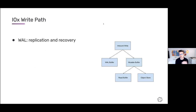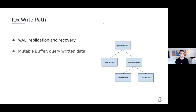Writes come into the database and land in the write-ahead log and what we call the mutable buffer. The write-ahead log allows replication to other IOx servers and recovery if we lose the server. Write-ahead logs are not very good for querying because it's essentially just an append-only log of events. So we need to be able to query data as soon as it comes in, and for that we have the mutable buffer that allows us to query recently written data. It's mutable because it has to be updated all the time as new data comes in — it's similar to a mem table.